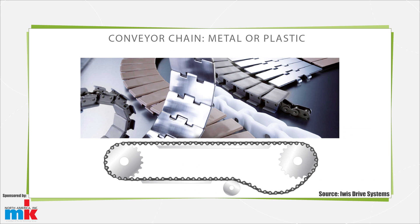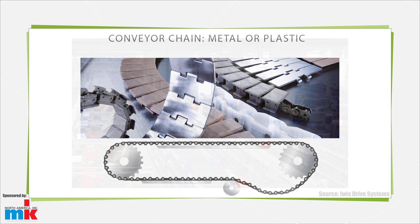Most conveyors in light and medium duty discrete transport applications use a belt wrapped around two or more pulleys. A motor powers the pulleys that in turn engage the conveyor belt. Belt styles and materials abound to meet specific applications. Some belts are low friction so product can slide a bit for accumulation; in contrast, high friction belts have more grip to better hold products.